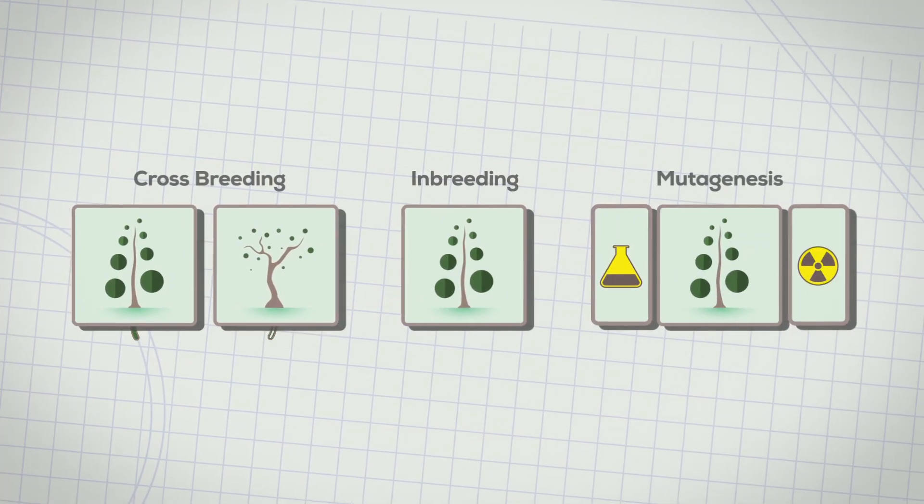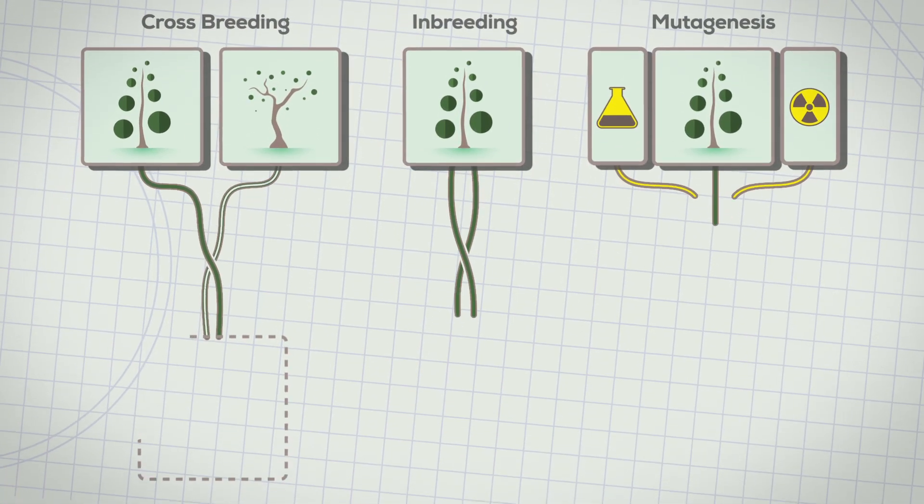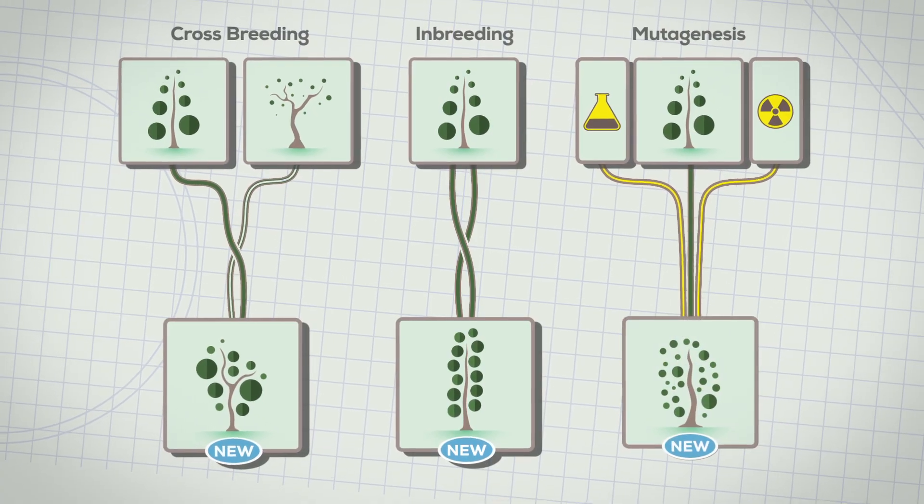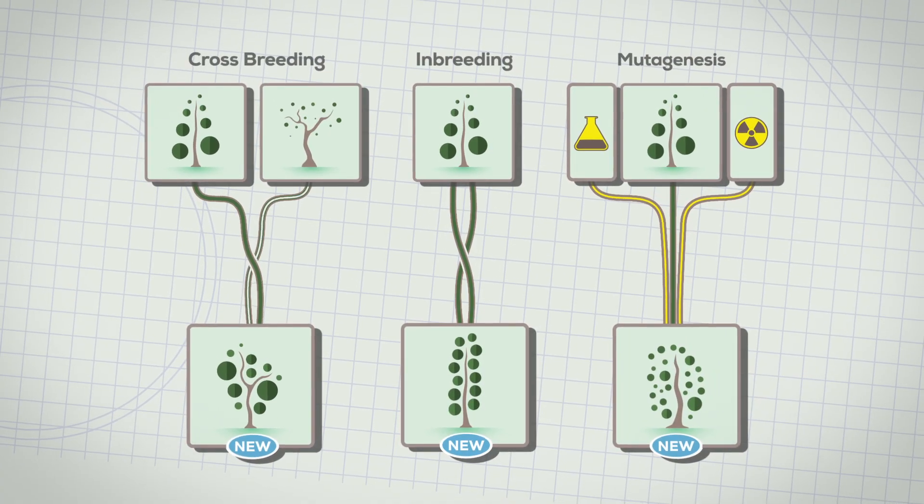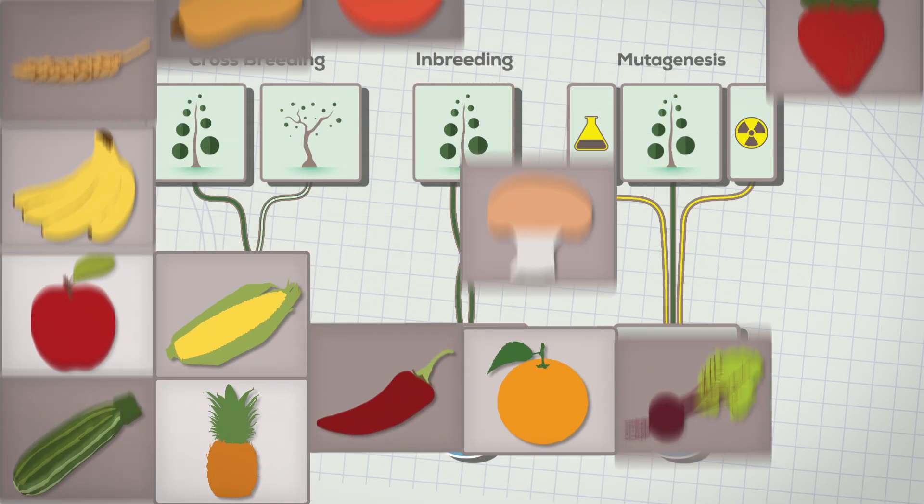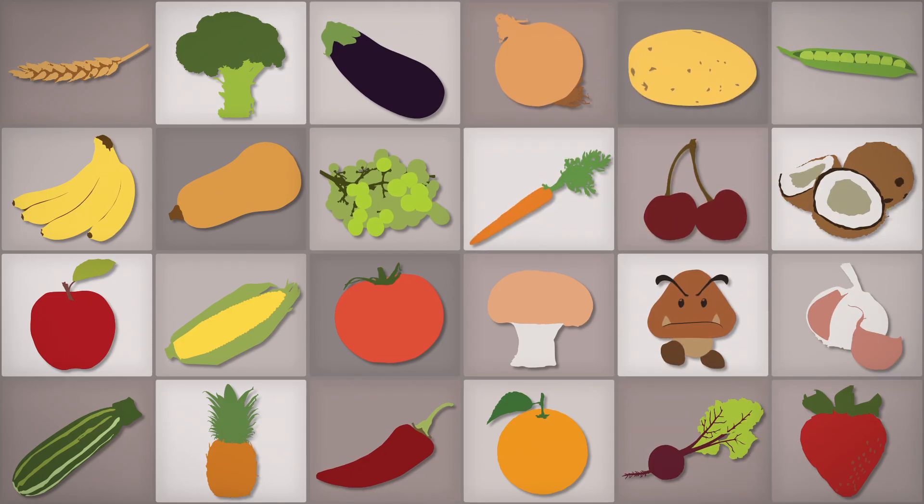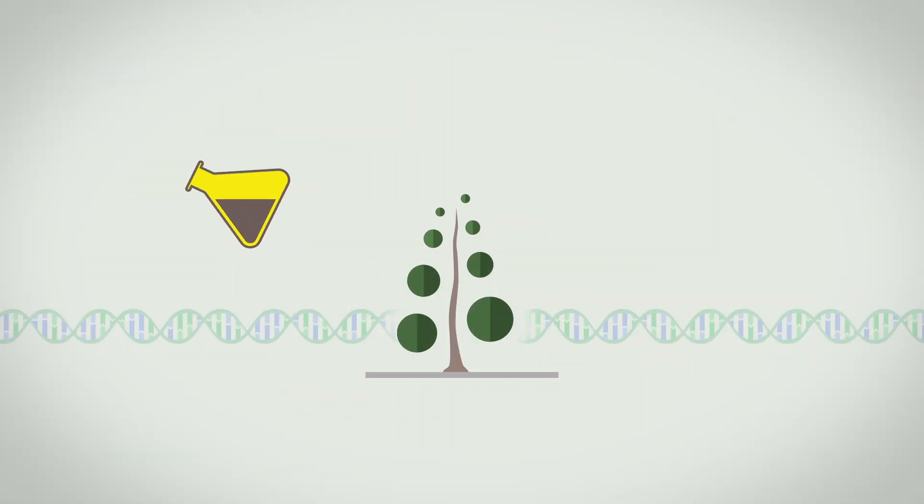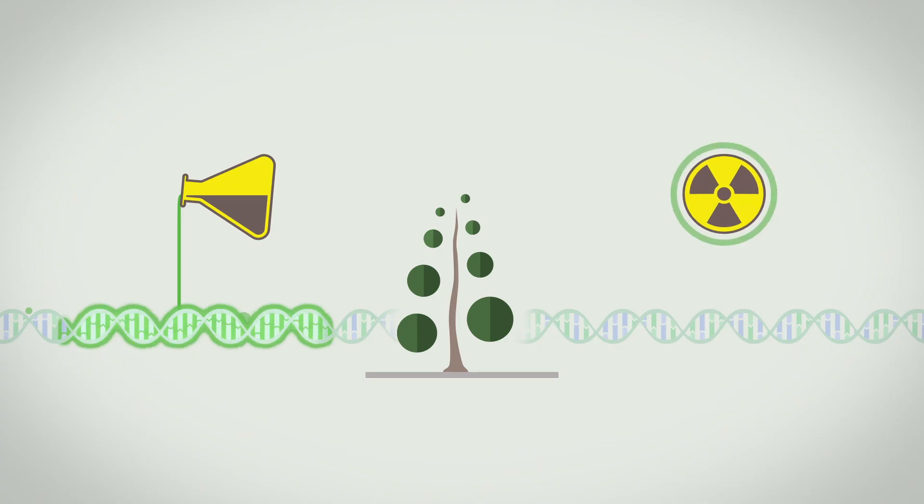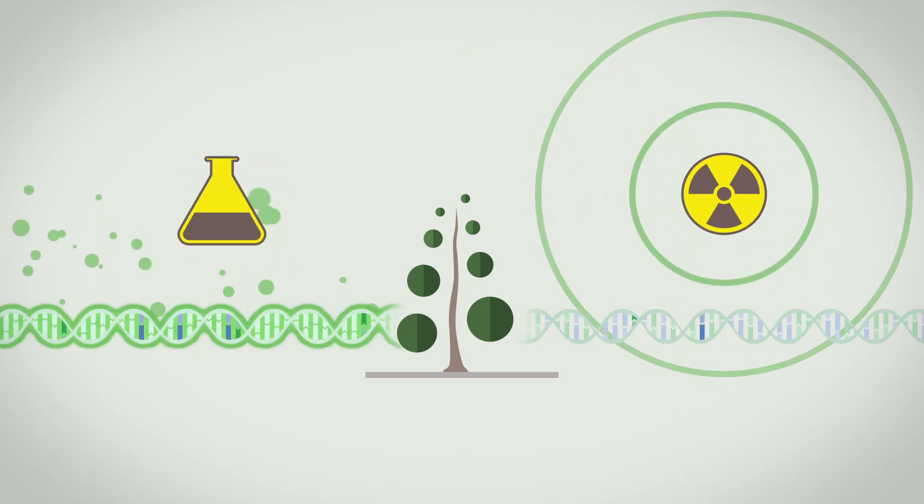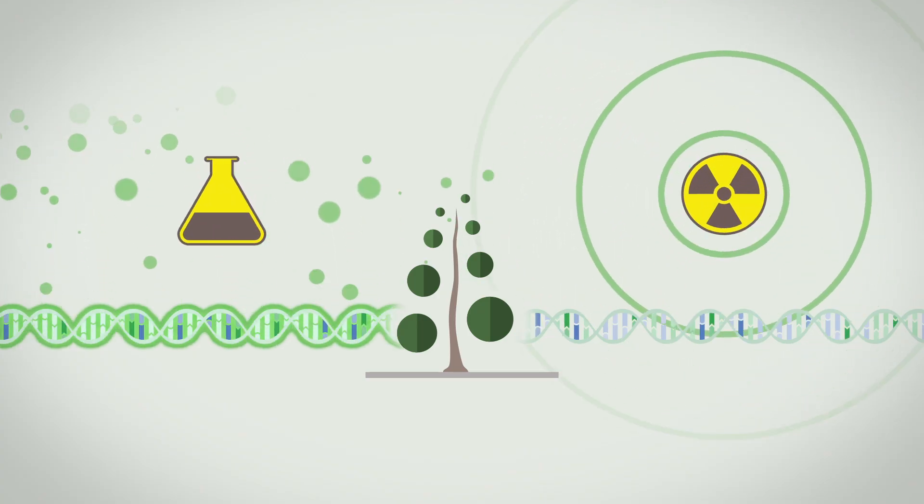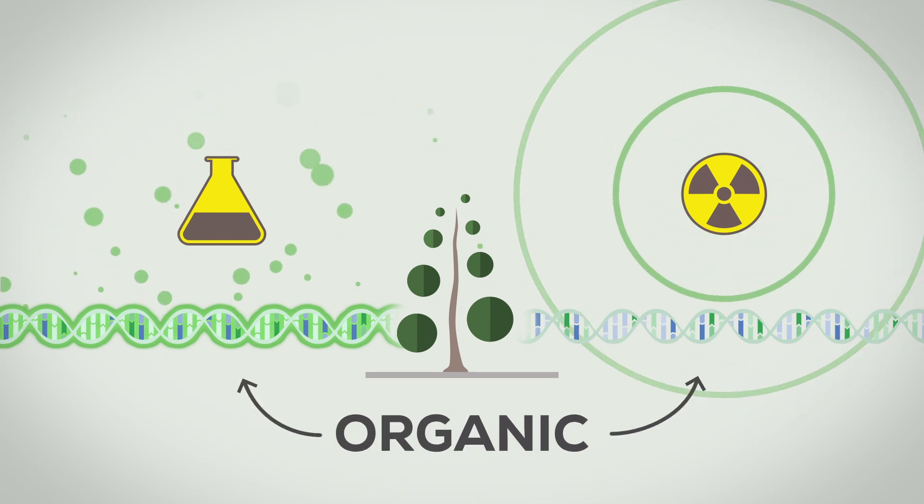Long before GM technology we had clever ways to create new crops with better traits by messing with their DNA, and by fiddling with their genomes we've developed unnatural but wonderful foods. We've often done this by blasting their DNA with chemicals or radiation causing thousands of random mutations throughout their genomes, but this is considered organic, not genetic modification.